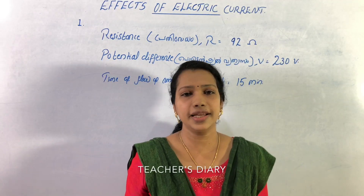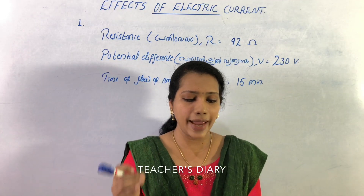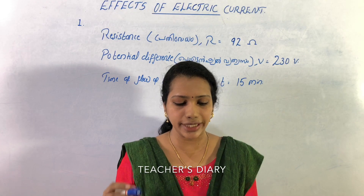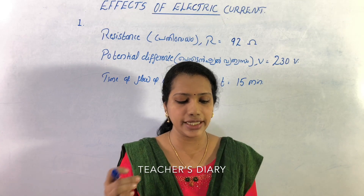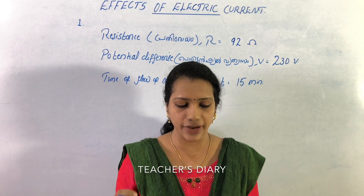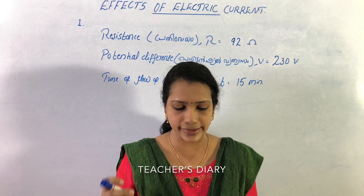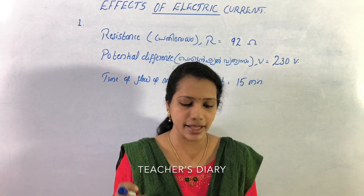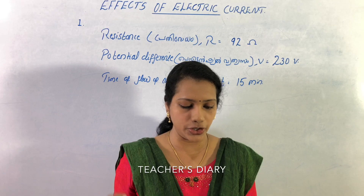Question number 3: If a potential difference of 230 volts is applied between the ends of a 92 ohm resistor for 15 minutes, how much heat can be produced?